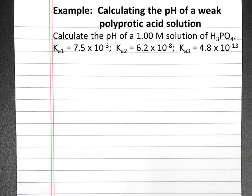In this example problem, we'll calculate the pH of a weak polyprotic acid solution. Our solution is a 1 molar solution of phosphoric acid. We're given the stepwise dissociation constants for the first, second, and third dissociation.